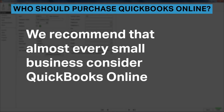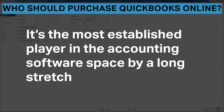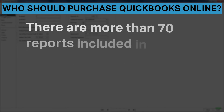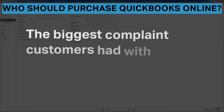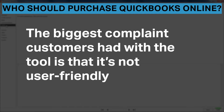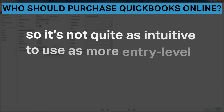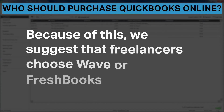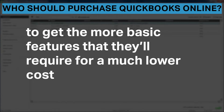We recommend that almost every small business consider QuickBooks Online. It's the most established player in the accounting software space by a long stretch, and many accountants and bookkeepers are trained in using the software. There are more than 70 reports included in the platform, and businesses have the ability to customize their own reports if need be. The biggest complaint customers had with the tool is that it's not user-friendly. The software was built with accountants in mind, so it's not quite as intuitive to use as more entry-level tools like Wave or FreshBooks. Because of this, we suggest that freelancers use Wave or FreshBooks to get the more basic features they'll require for a much lower cost.